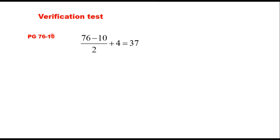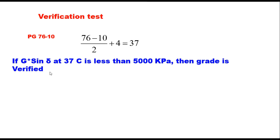This DSR test is more of a verification test rather than a method for determining the lower temperature of a PG grade. It is conducted at an intermediate test temperature because at the true lower temperature, delta would be too small to measure. For a binder graded PG 76-10, the verification test is conducted at the mean temperature: (76 + (−10)) / 2 + 4 = 37 degrees centigrade. If G* sine delta at this temperature is less than 5000 kPa, then this grade of the binder is verified.